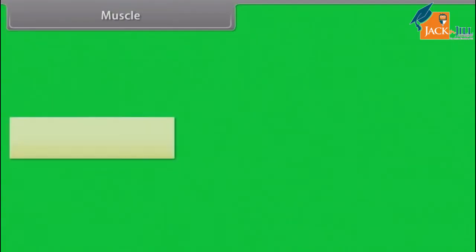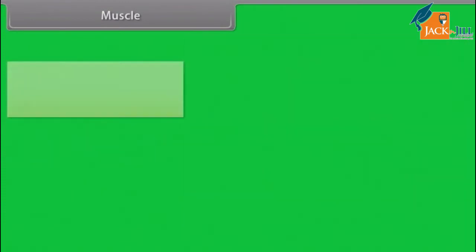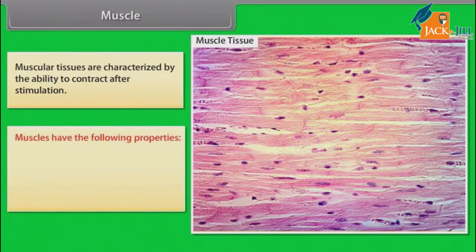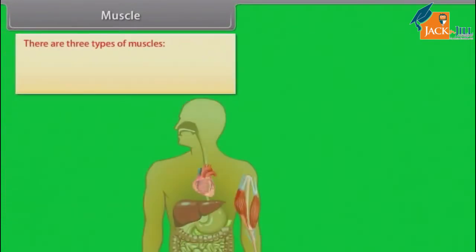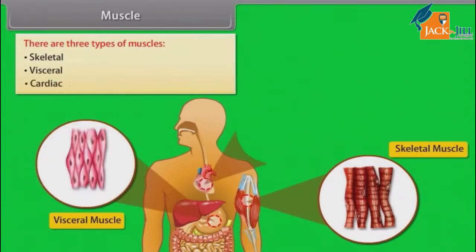Muscles are specialized tissues originated from the mesodermal layer. Muscular tissues are characterized by the ability to contract after stimulation. Muscles have the following properties: excitability, contractility, extensibility, and elasticity. There are three types of muscles: skeletal, visceral, and cardiac.